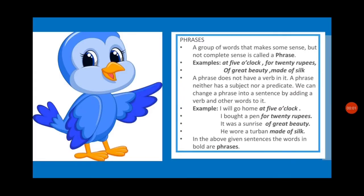Now let us discuss what are phrases. A group of words that makes some sense but not complete sense is called a phrase. For example: 'at five o'clock', 'for 20 rupees', 'of great beauty', 'made of silk'. These are groups of words conveying incomplete sense. 'At five o'clock' — what happened at five o'clock? We have no clue. So this gives us incomplete sense, and such a group of words is called a phrase.